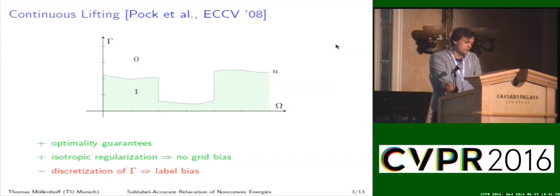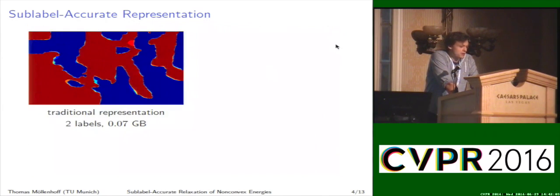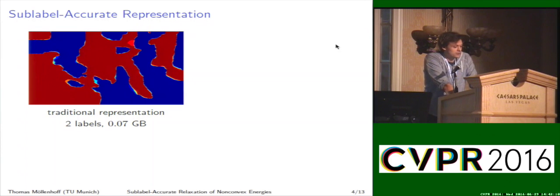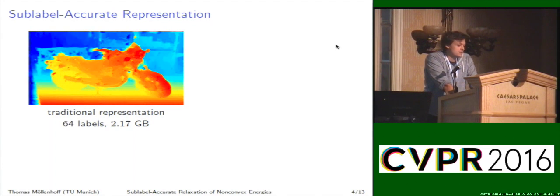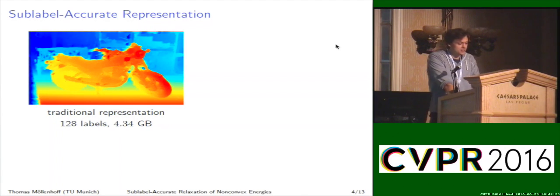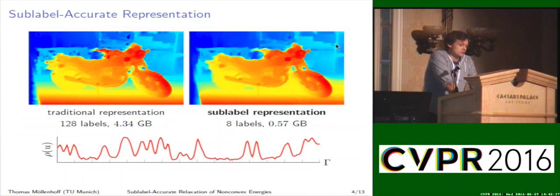This is the point of this work: to look at this discretization of gamma and see if we can do better. On the example of stereo matching, if one solves this with the continuous multi-label approach and discretizes gamma into two labels, we don't recognize the motorcycle but get a two-region segmentation. We can finer and finer discretize the range gamma, but then the formulation quickly becomes intractable. For 128 discretization labels, we have a memory requirement of 4.3 gigabytes. With the proposed method, we can solve this problem using only eight labels and still get a very smooth disparity map at a fraction of the required runtime and memory.